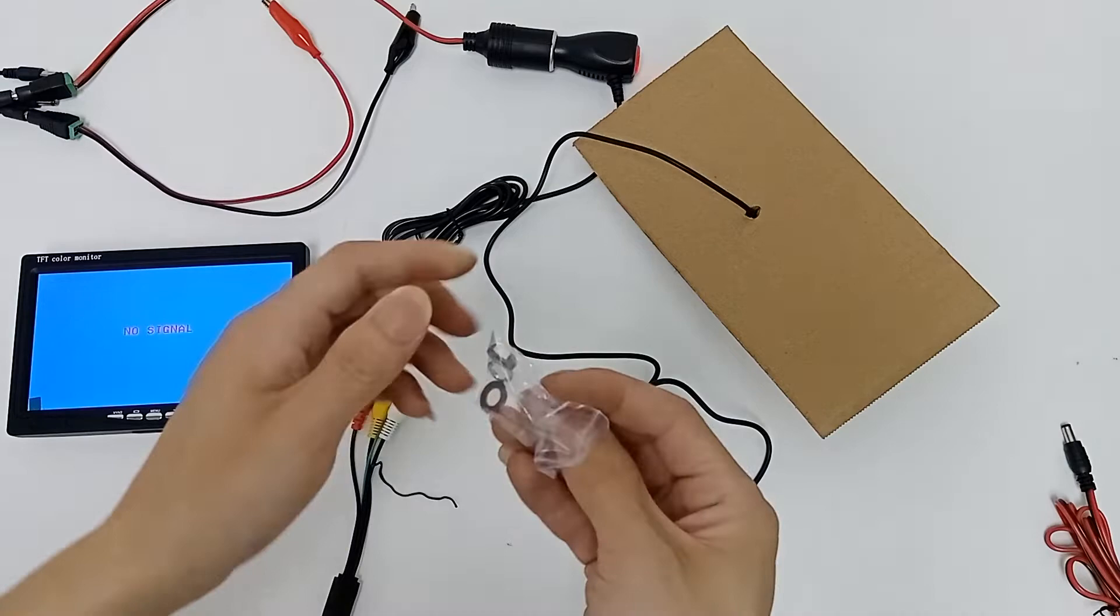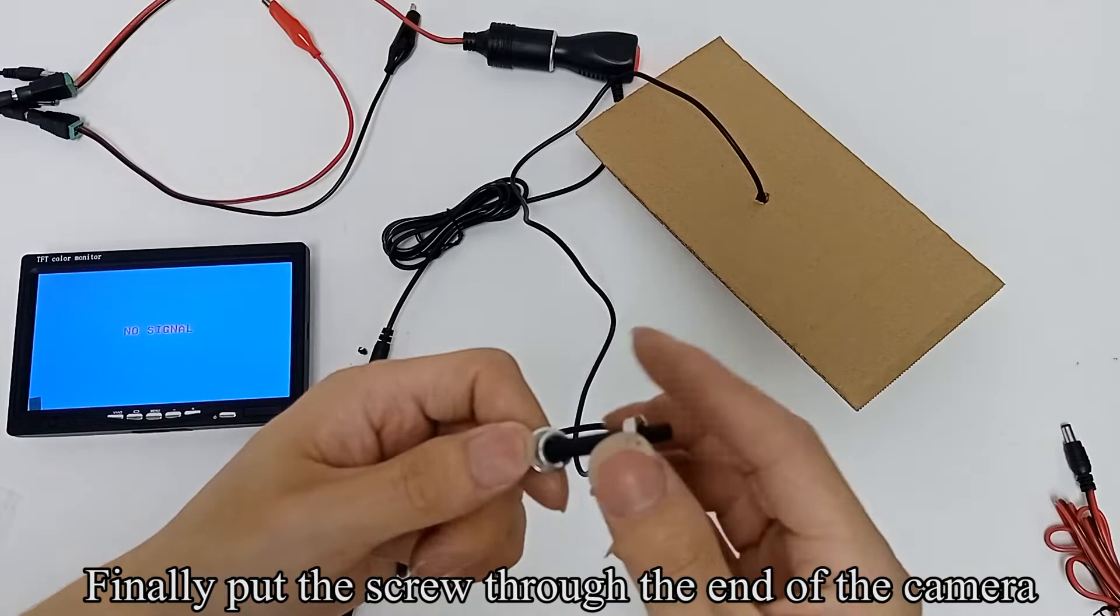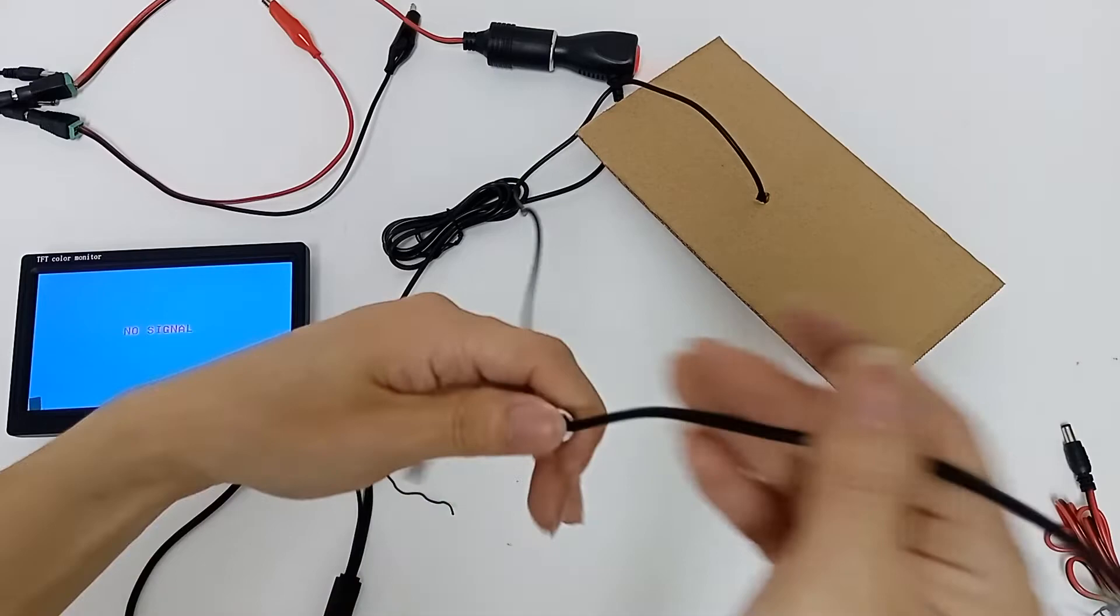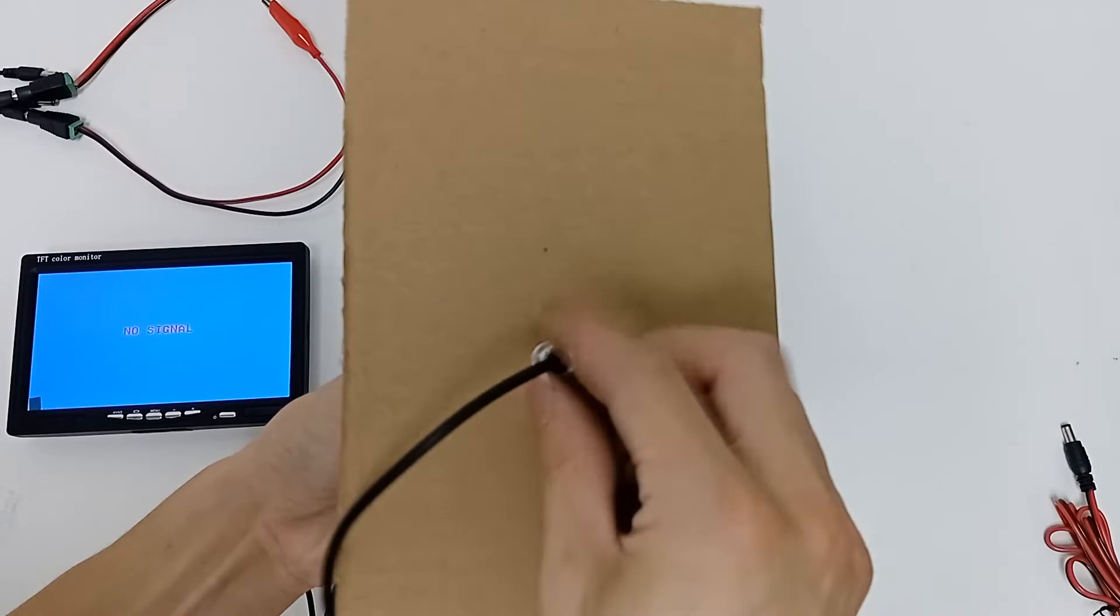Take out the screw. Pass the spacer through one end of the camera first, then pass the circular ring through. Finally, put the screw through the end of the camera. After adjusting the angle of the camera, tighten the screws.